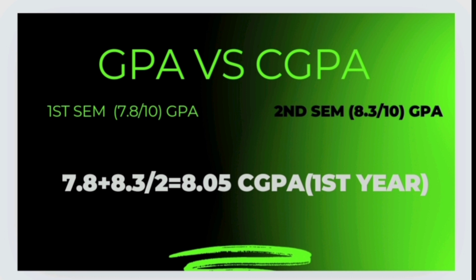Now you will know whether to state CGPA or GPA when you go for company interviews. In first year, subjects are generally easy, so you can aim for an 8.5 or 9.5 CGPA. Kindly try to do your best — that is my advice. If you have any questions or doubts, please leave them in the comments.